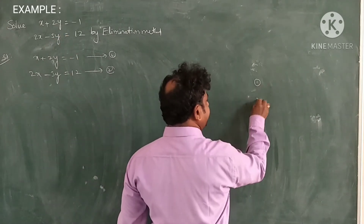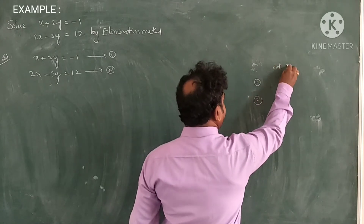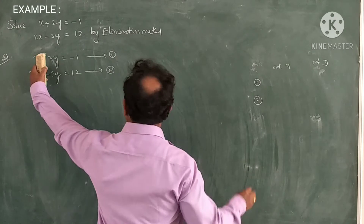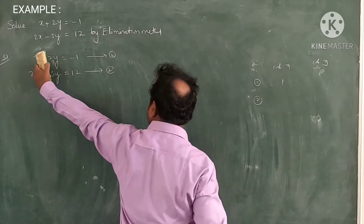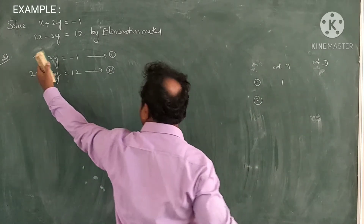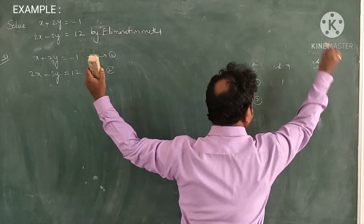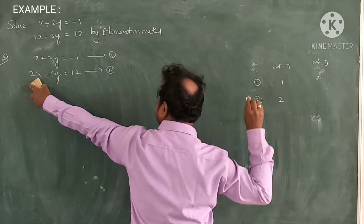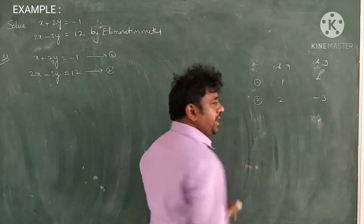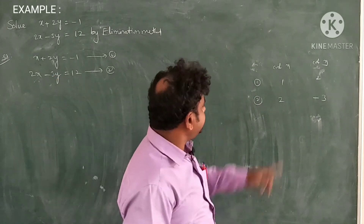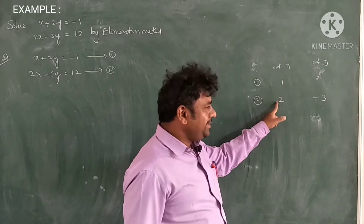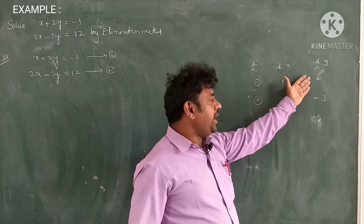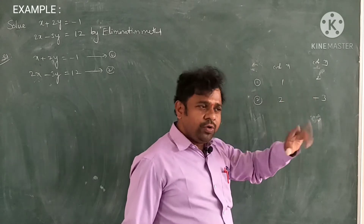First, observe the coefficients, students. Coefficient of x and coefficient of y: in equation 1, there is no written coefficient for x, so it is 1, and the coefficient of y is 2. In equation 2, the coefficient of x is 2 and the coefficient of y is minus 3. Students, are the x coefficients equal? No. Are the y coefficients equal? No.